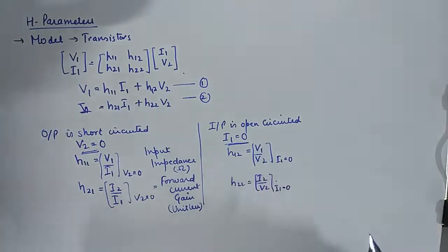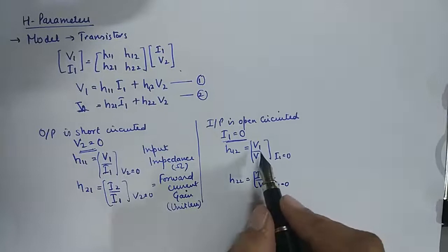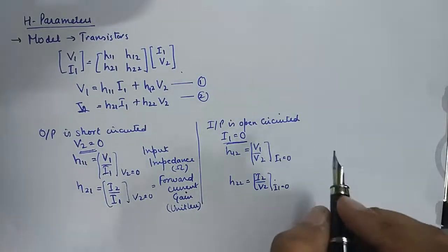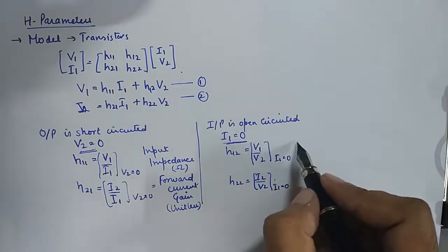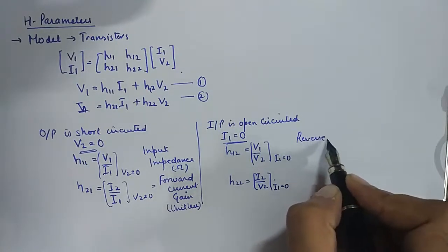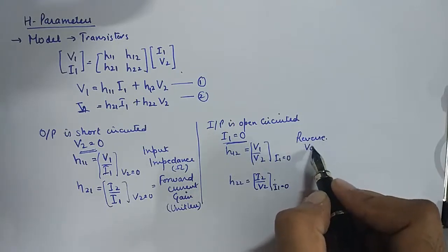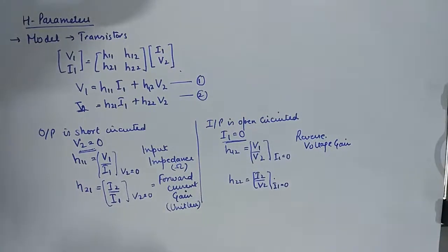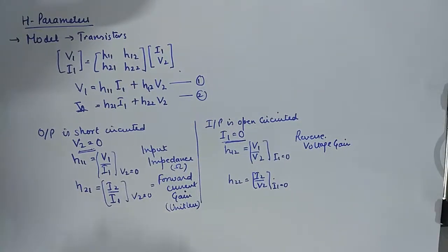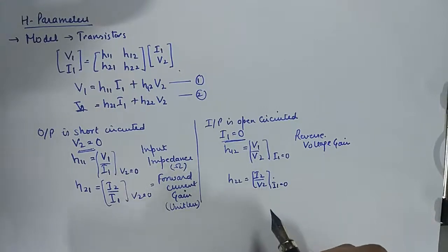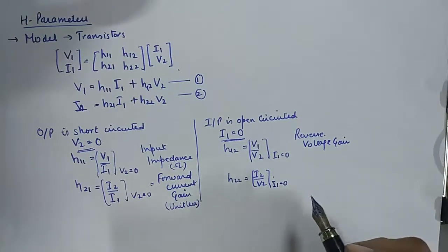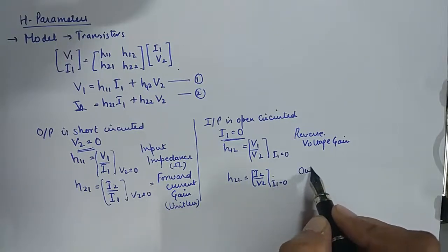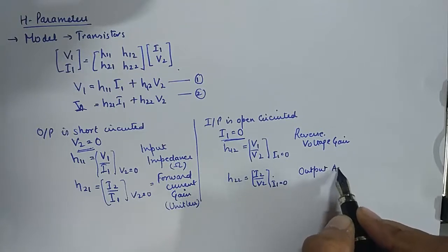This quantity over here is the ratio of two voltages. It is the ratio of input voltage to the output voltage. So this parameter is known as reverse voltage gain. And if you look at this ratio, this is the ratio of current upon voltage. So this must be an admittance of some kind. And what kind of admittance is that? It is known as output admittance.